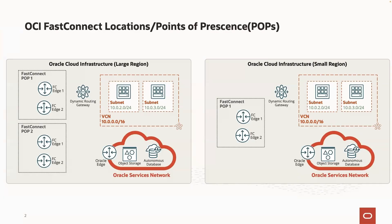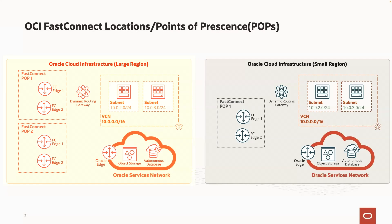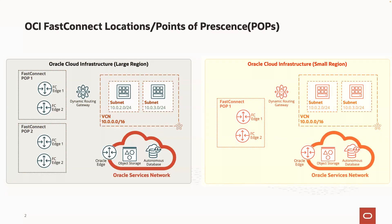Before we begin, it's important to understand how the Oracle FastConnect locations or points of presence are designed and how our scheduled maintenances are performed. Each one of the OCI regions has specific locations, or POPs, where our physical edge devices are located. Some of our larger regions have multiple POPs, while some of our smaller regions have a single POP. Regardless of how many POPs a region has, we have multiple physical edge devices in each POP. You can start to see how and where customers can achieve redundancy with this design.